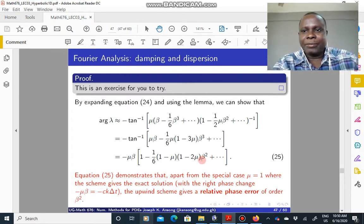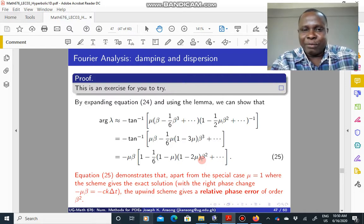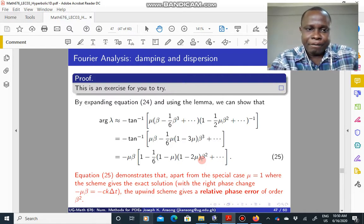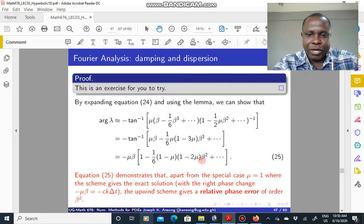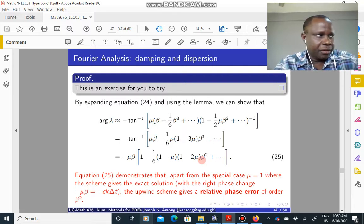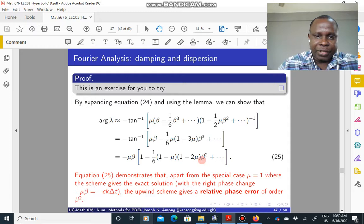So we've seen that the upwind scheme can be used to solve numerically the advection equation, but we noticed that there is damping as well as dispersion going on, and we have given reasons why there is damping and dispersion using this theoretical approach. So that is what we've done so far.